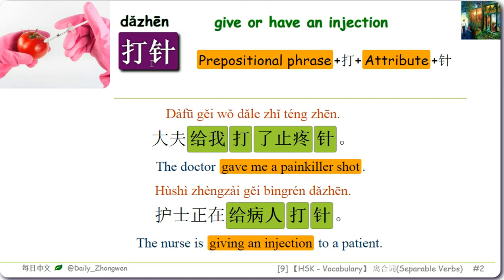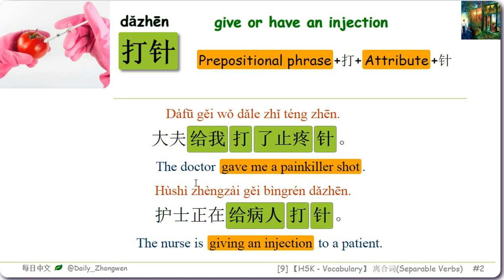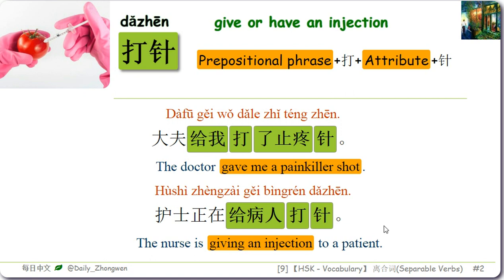打针 means give or have an injection. It is the last separable word we are going to learn today. One common structure is: prepositional phrase plus 打, plus attribute, plus 针. For example: 大夫给我打了止疼针 — The doctor gave me a painkiller shot. 护士正在给病人打针 — The nurse is giving an injection to a patient. 给我 and 给病人 are prepositional phrases.